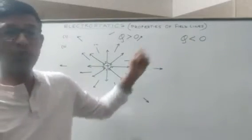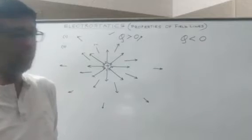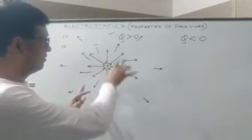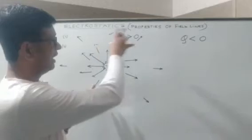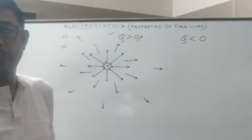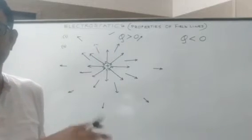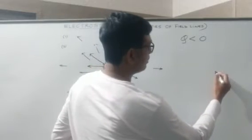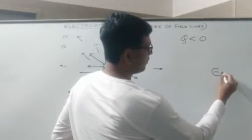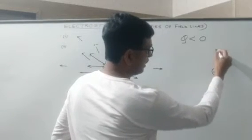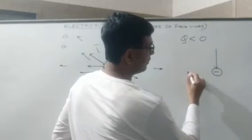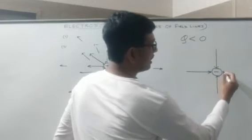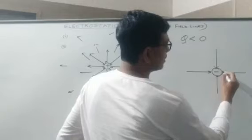For a negative source charge the diagram would be identical to the positive case except that the direction of the arrows is reversed. The field lines will terminate and enter the charged body at right angles — this is how the field lines are plotted for a negative source charge.